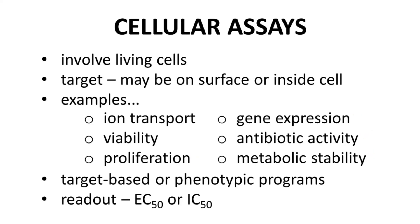Cellular assays are appropriate for both target-based and phenotypic programs. For example, when developing a new antibiotic, one does not need to know the drug target — you can simply culture bacteria and see whether the molecule kills the bacteria. This would be a functional assay, and you do not need to know how the molecule works to measure its activity. Activity values in cellular assays are normally reported as EC50 or IC50 values.